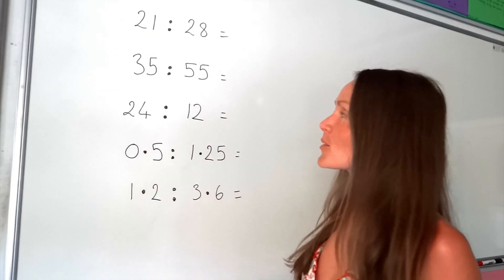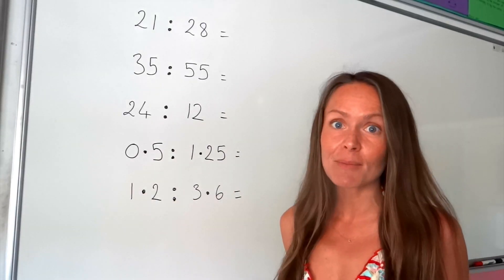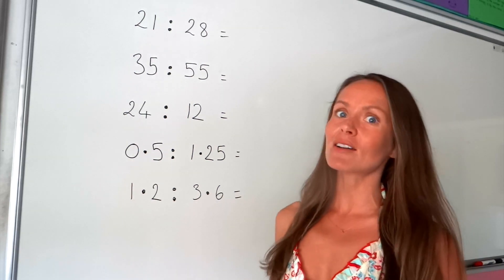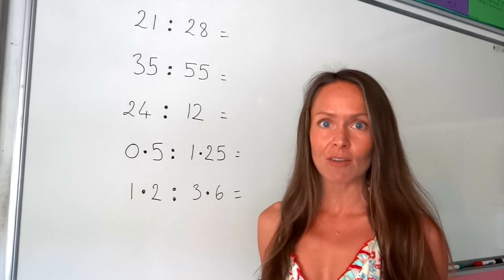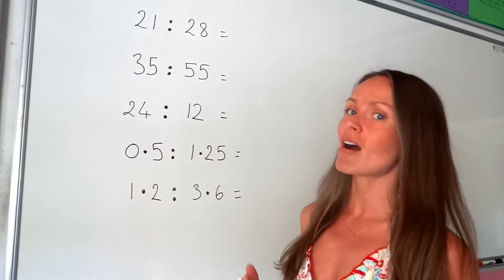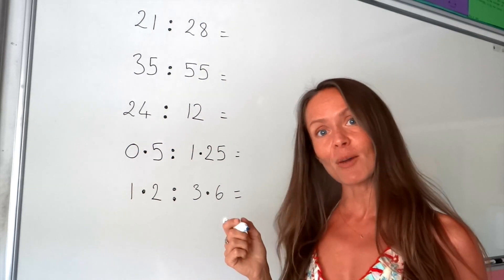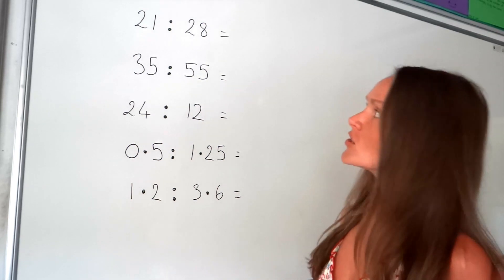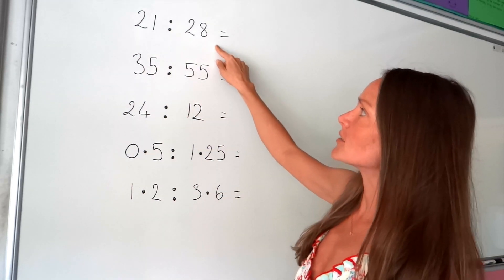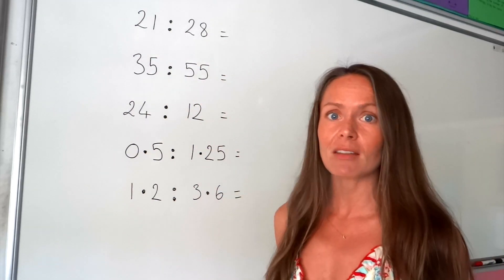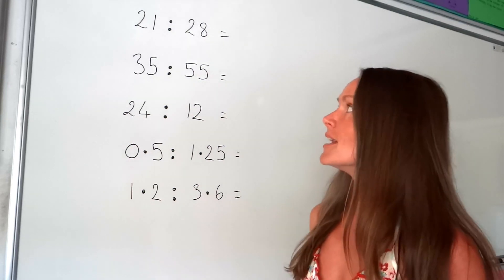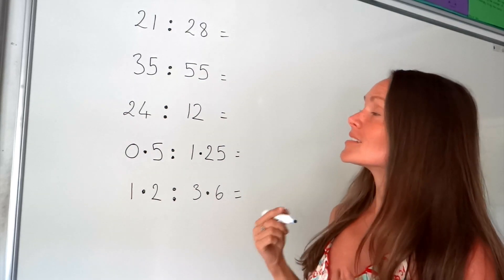Hey guys. In this video, I'm going to show you how to simplify ratios. It's very similar to simplifying fractions in that we're trying to identify the highest common factor in the numbers given. So in the top question, the highest common factor — the biggest number that fits exactly into both 21 and 28 — is 7.